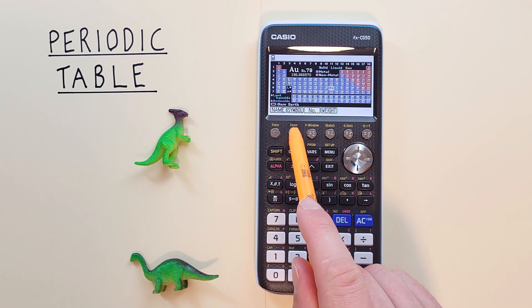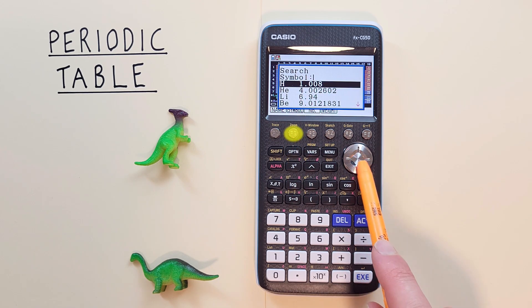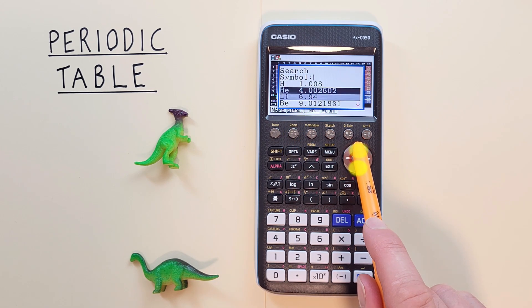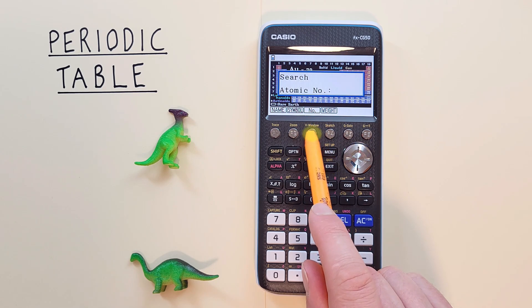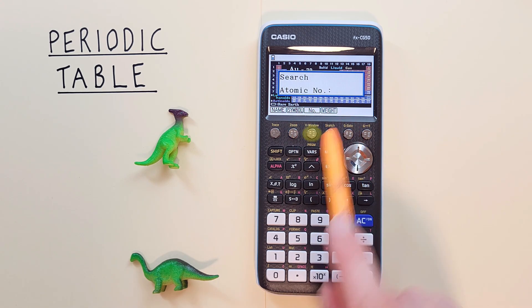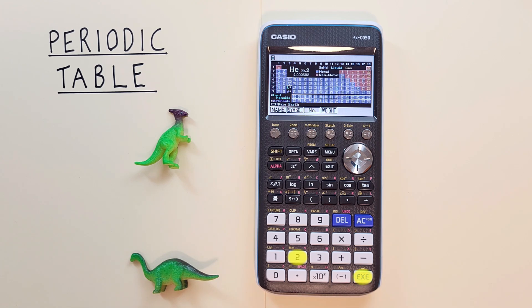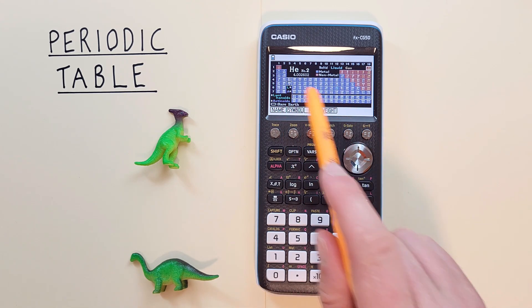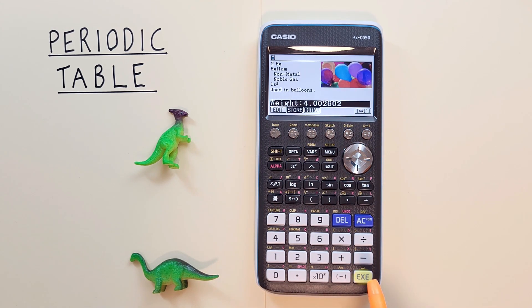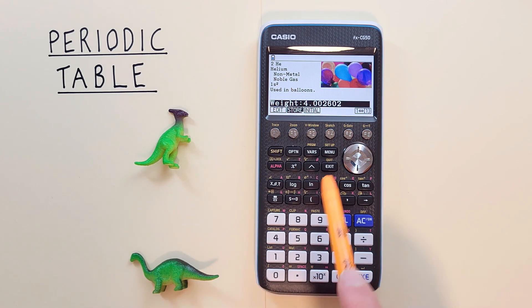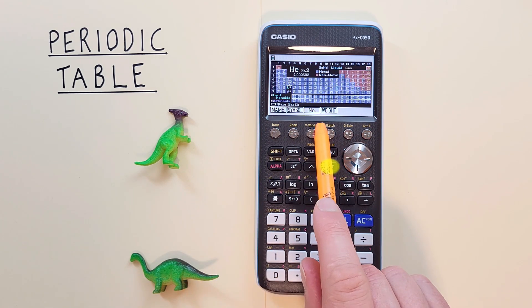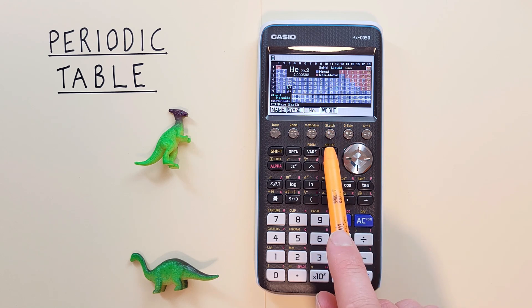And we can also search by the symbol, the number of the element. So let's try number two. There we go. It's taking us to number two, helium.